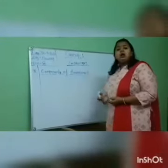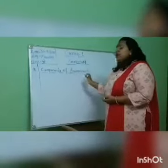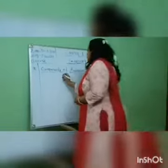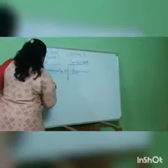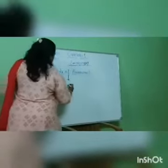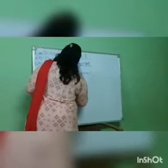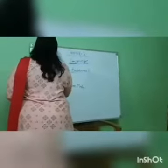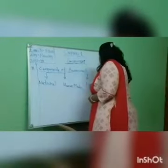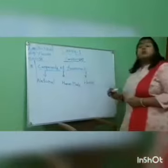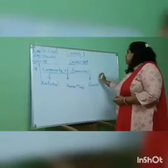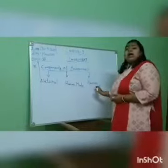Now I will explain the components of the environment. The components of the environment are divided into three parts: the first one is natural, the second one is human made, and the third one is human.